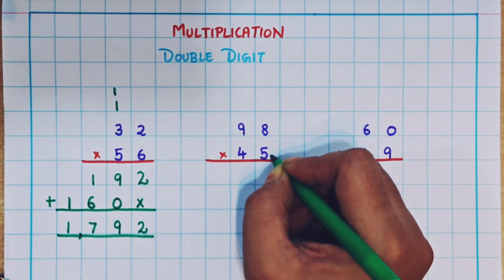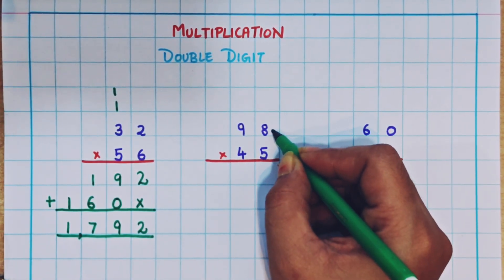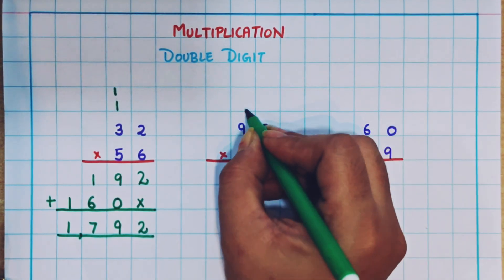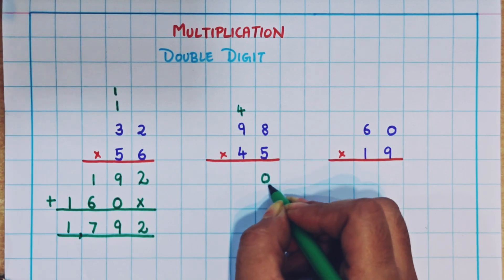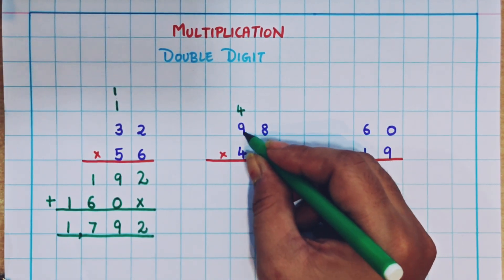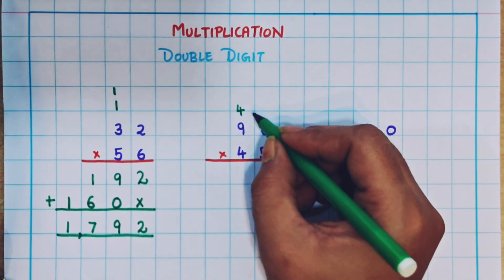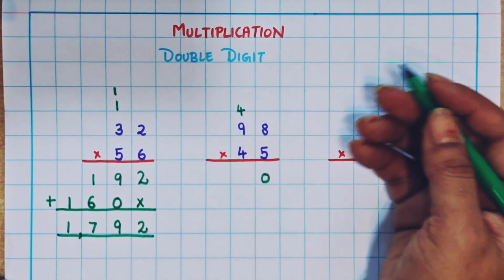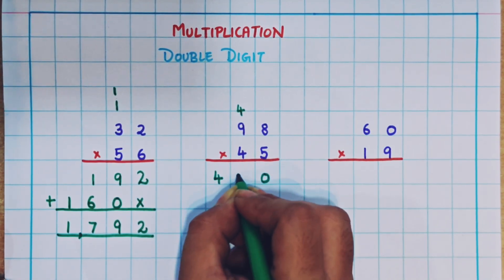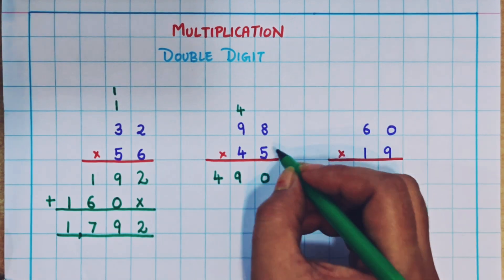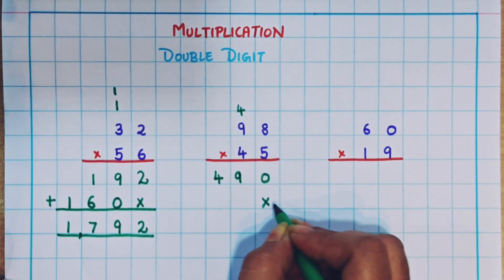First I'll do the multiplication using the number in the ones place. 5 eights are 40, so 4 I will write as a carryover and here I'll write 0. Now 5 nines are 45, plus carryover 4 is 49. So here I'll write 49. Now I'll put a cross mark here as I have done the multiplication using the ones place.